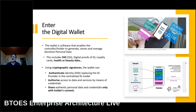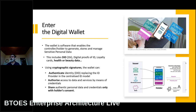At this point, I want to introduce the Web 3.0 element: enter the digital wallet. What is the digital wallet? It's basically a piece of often mobile software that enables the holder to generate, store and manage sensitive personal data. It can carry the decentralized identity and identity documents, digital proofs of ID, loyalty cards, health data — going up to passports and driving licenses depending on how governments provide them. The wallet can establish trust over IP through cryptographic signatures and interoperable standards and protocols, so it can authenticate identity — replacing centralized identity providers — and authorize access to data and services by means of signed credentials, allowing sharing of authenticated personal data with the holder's consent. This way, the responsibility for managing consent is back with the consumer.